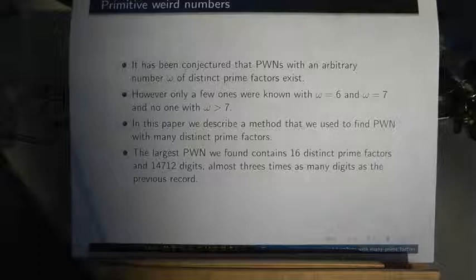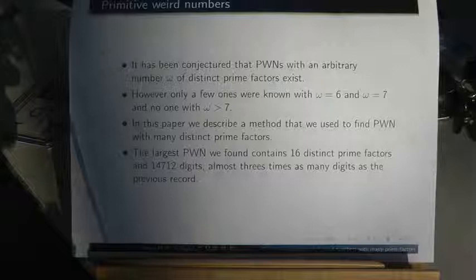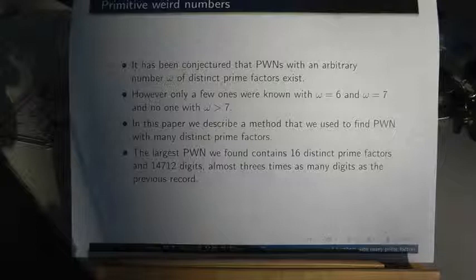In this paper we describe a method that we used to find primitive weird numbers with many distinct prime factors. The largest we found contains 16 distinct prime factors and 14,712 digits, almost 3 times as many digits as the previous record.